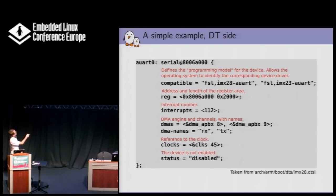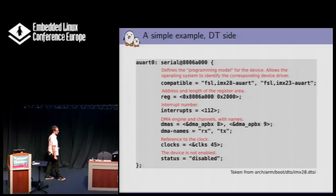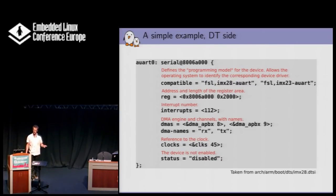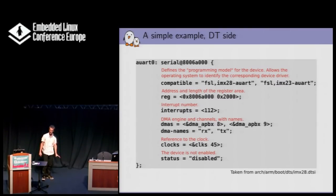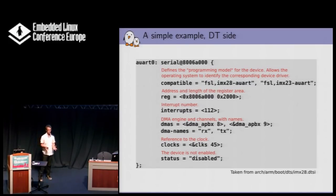In this DTSI file, we say this device is disabled. When status is disabled for a platform device, it tells the kernel not to probe that device. The reason is that in DTSI files you describe all the internal SoC devices, but not necessarily all of them are used on a specific board. In the DTS file for a specific board, you're going to say 'this device, I'm going to enable it so that it gets probed.' But if some UART is not wired on your specific board, you'll probably leave it disabled, because there's no point in probing a device that's not being used.